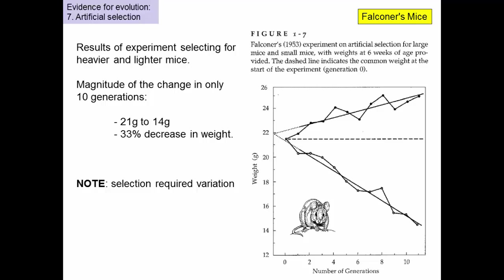Now, one point about this that's interesting is this initial selection when Falconer started. He had heavy mice that he mated and then lighter mice that he mated. The only reason this was able to work is because there was variation. Not all the mice were exactly the same. So this selection that he did required variation.